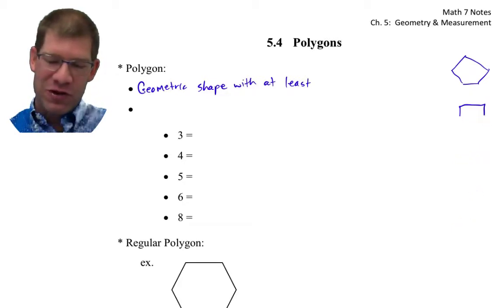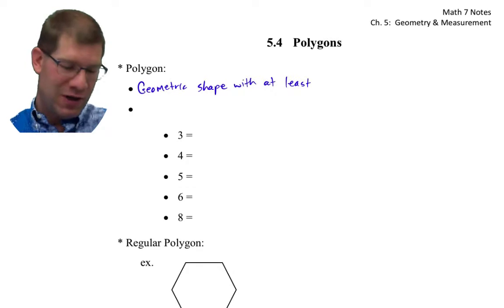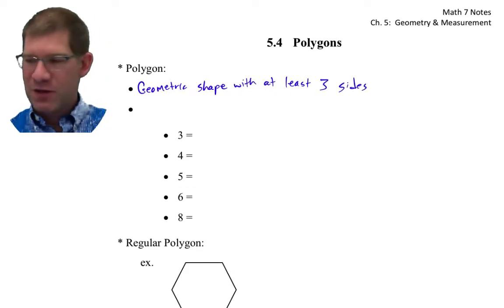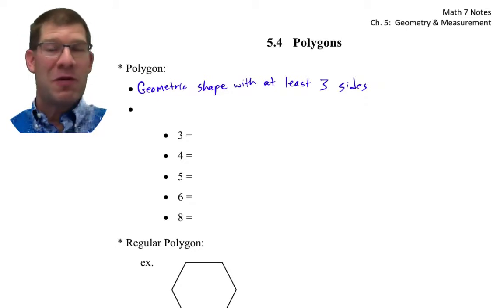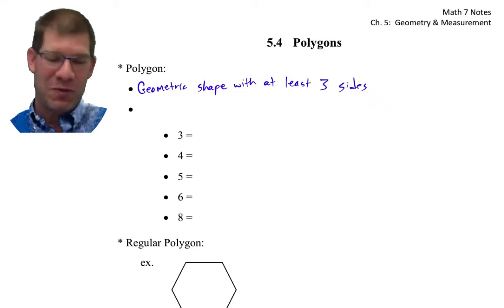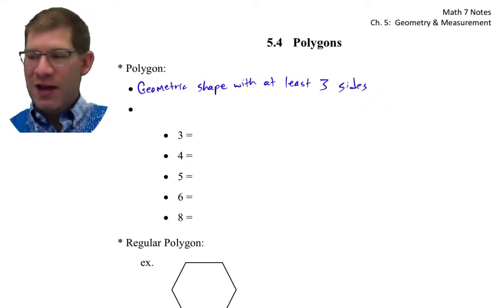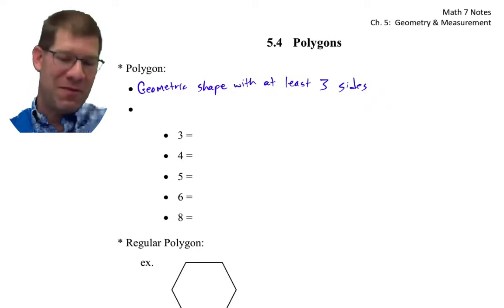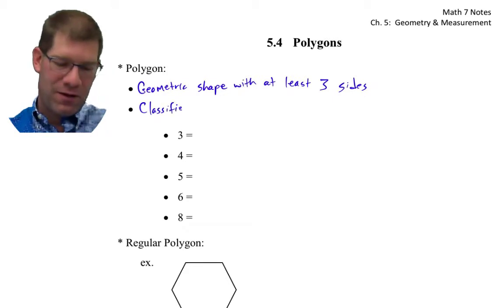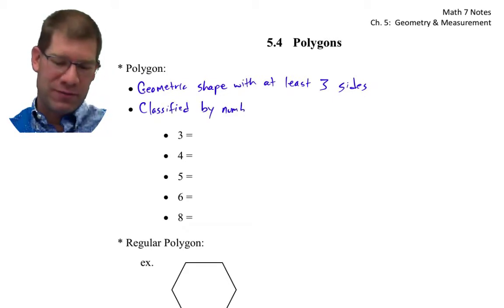Those first two with only two sides, they're not enclosed. So a geometric shape with at least three sides — that's going to be it. Kind of like we went back to triangles and quadrilaterals and how do we classify them, how do we put them into groups? With these polygons, we classify them by number of sides.